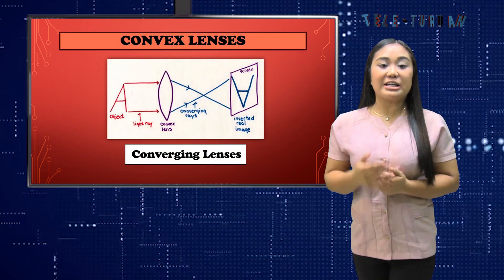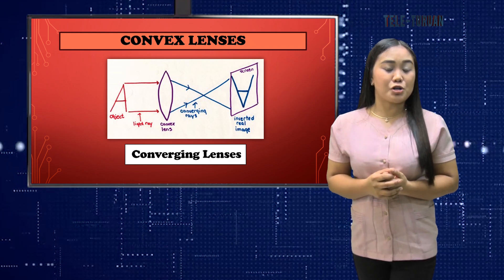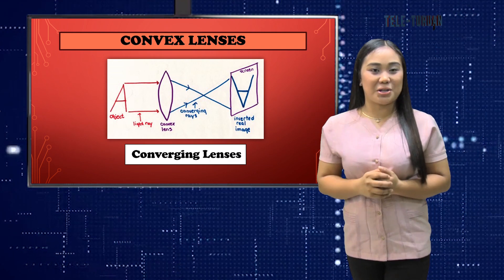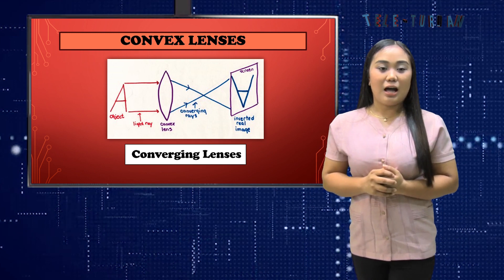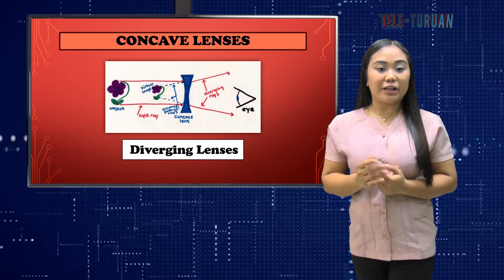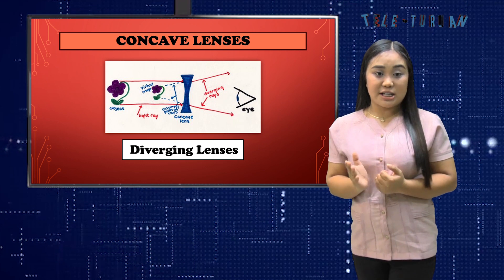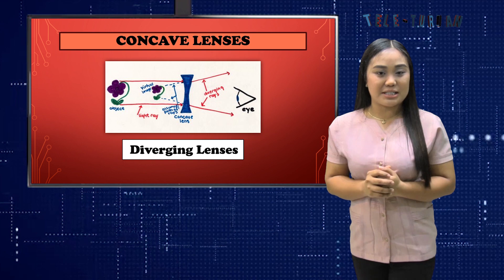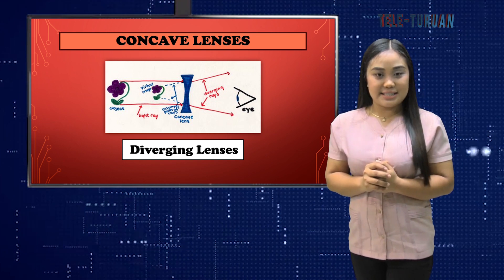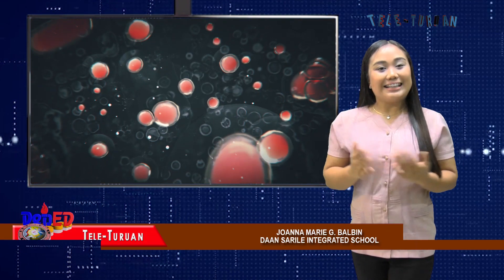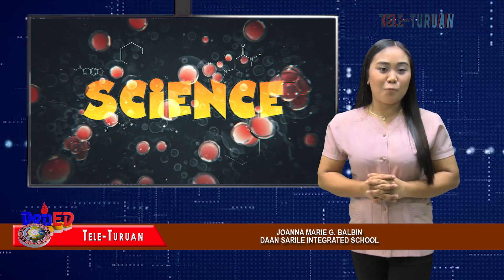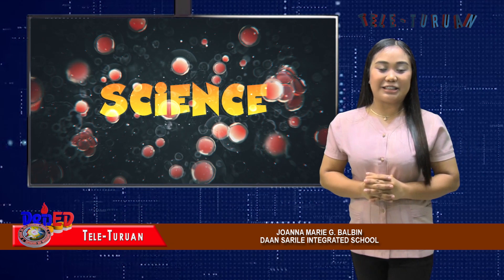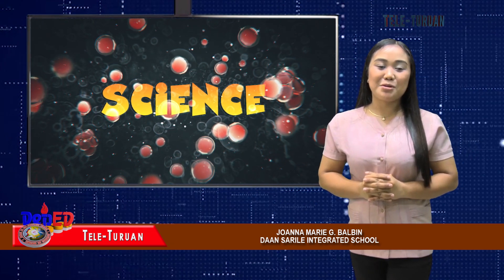A convex lens is converging and can produce both virtual and real images. A concave lens is thin at the center and thick at the edges. Concave lenses only produce virtual images — they are diverging lenses. Thank you very much for your active participation. I hope you learned a lot. This has been Joanna Marie Gibaldin of the Ansarilla Integrated School. See you again next time. Goodbye!